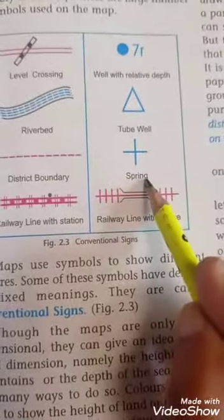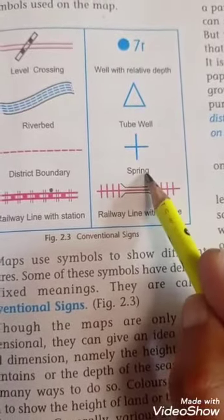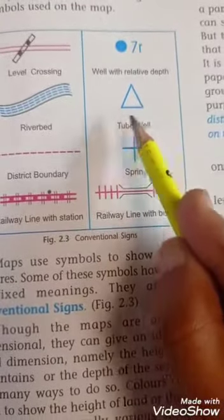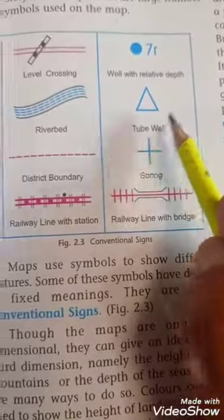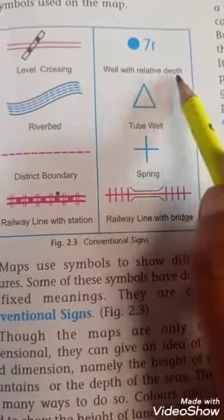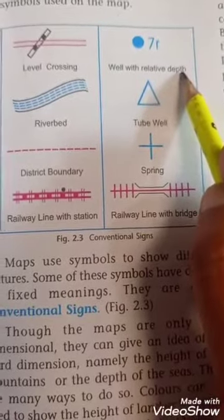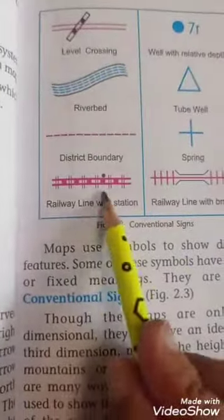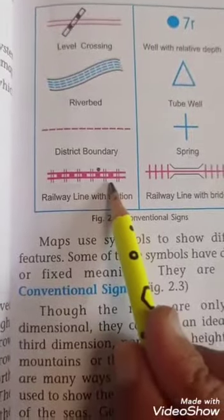For example, this sign or symbol indicates the railway line with the bridge. Next is spring. The plus sign indicates the spring. Here the sign marked indicates tube well. This sign indicates the well with the relative depth.